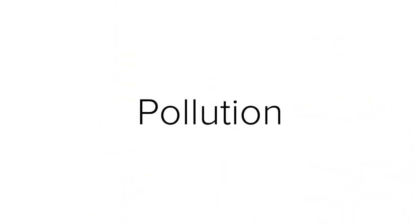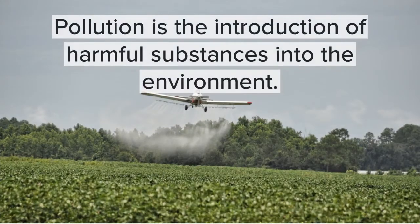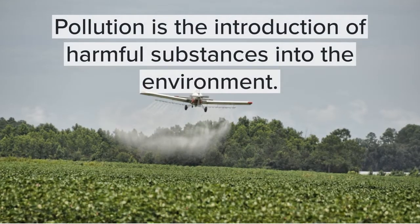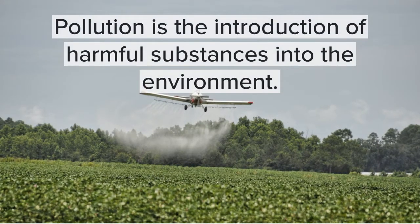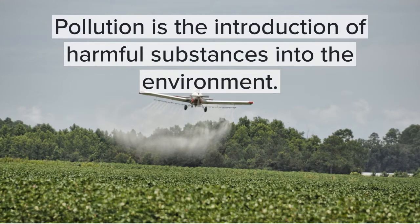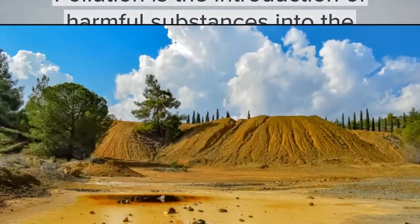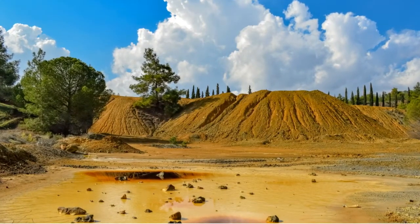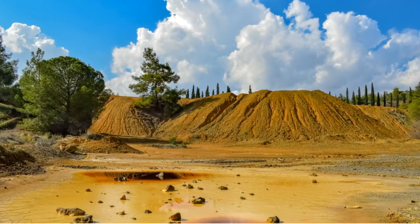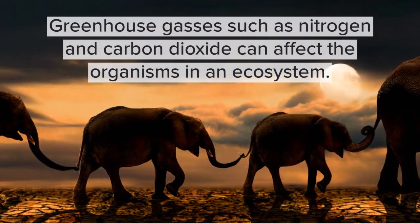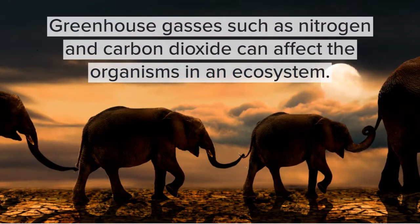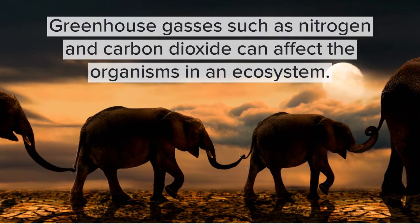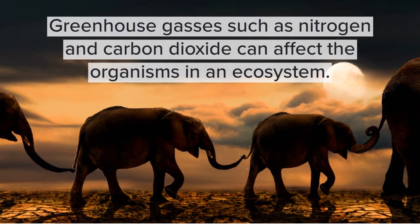3. Pollution is the introduction of harmful substances into the environment. The chemicals used in farming can pollute the soil and water sources. This will increase environmental acidity, resulting in the loss of plant and animal biodiversity. Greenhouse gases, such as nitrogen and carbon dioxide, can affect the organisms in an ecosystem.